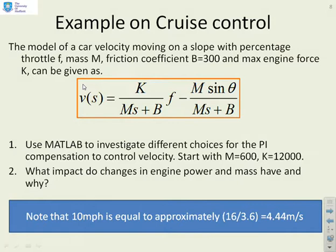Final example then, cruise control. So we've got a model of a car which is moving the velocity V on a particular slope. You've got a signal F, which is the percentage of throttle. So it goes 0 to 100%. You've got a mass M, a friction coefficient B, a maximum engine force given by K. And you'll see we've given you here a representative model for how this car will go. And what we want you to do is, again, use MATLAB to investigate a PI compensator for keeping the velocity at the desired speed. And we're suggesting in the first instance, start with a mass of 600 and a maximum engine force of 12,000 and see what sort of PI compensator you'll come up with. Just as a warning down below, if you need to convert miles per hour to meters per second, you need to do a calculation a bit like this.